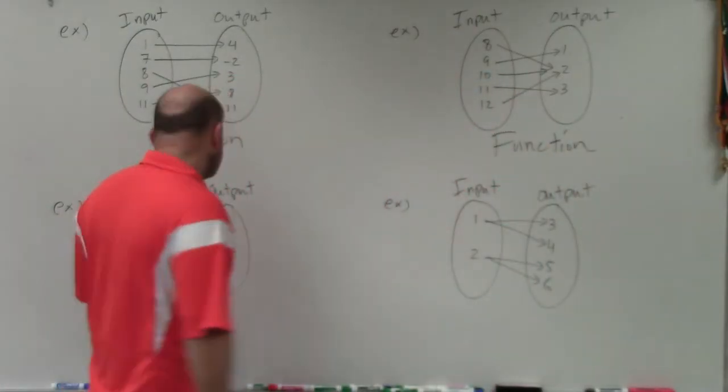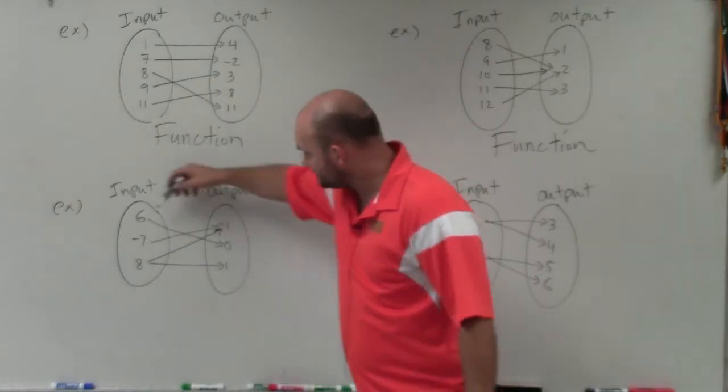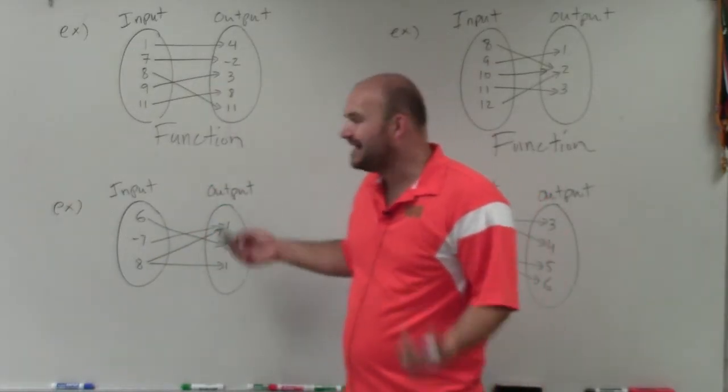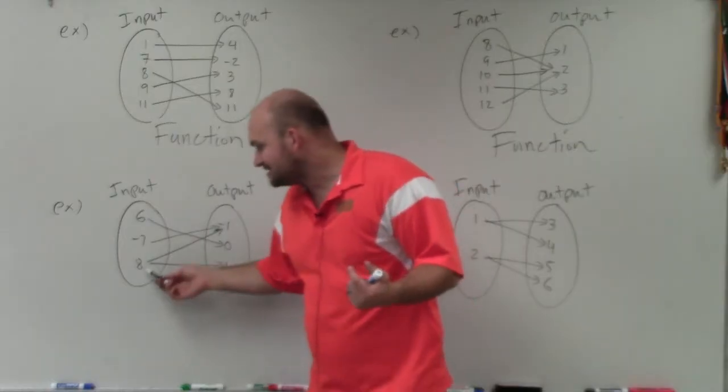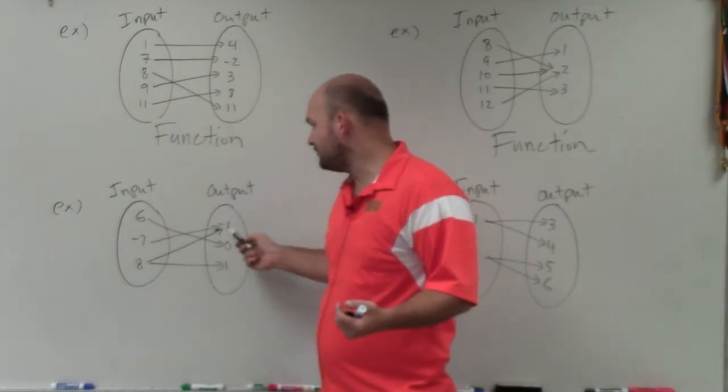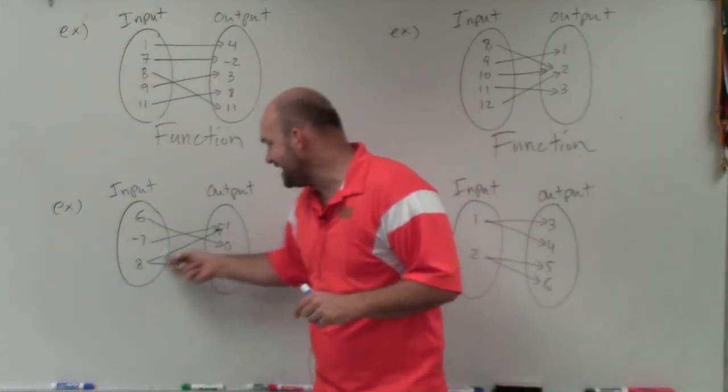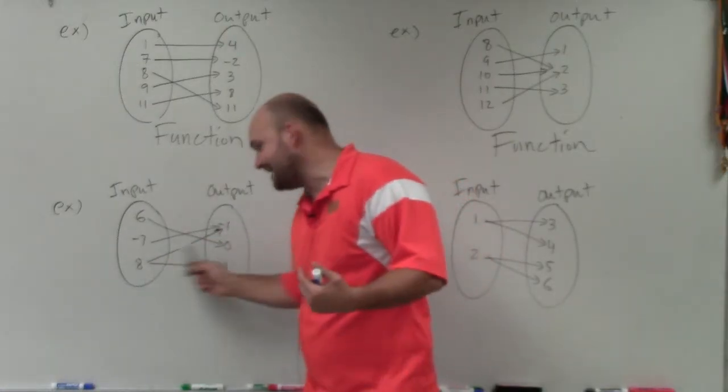In this example here, you can see that 6 uniquely goes to 0. Negative 7 uniquely goes to negative 1. However, 8 does not uniquely go to negative 1. It's not because negative 7 goes to negative 1, but because 8 goes to negative 1 and 8 goes to 1.